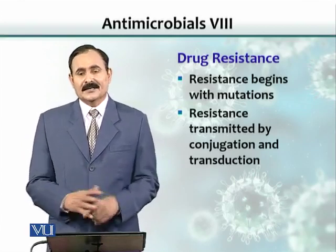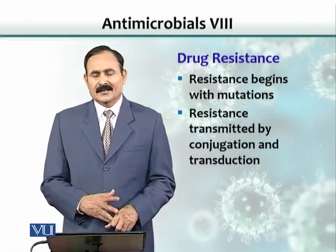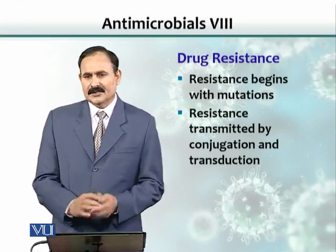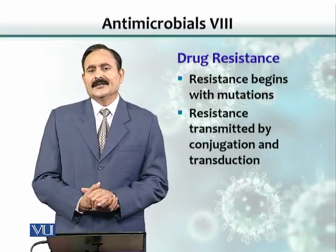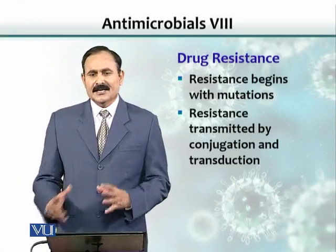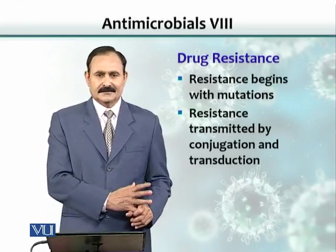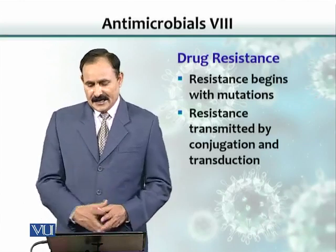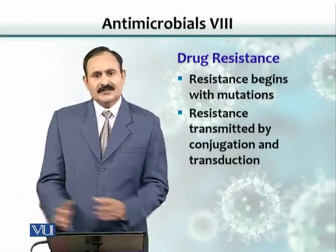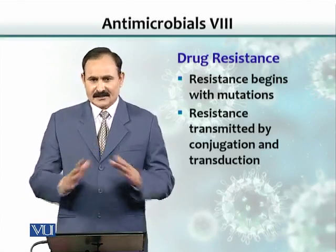As we saw previously, there are three ways — transduction, transformation, and conjugation — by which bacteria or microorganisms can exchange or give out their DNA genes or DNA structures. Once they acquire resistance, they transmit it both vertically and horizontally.